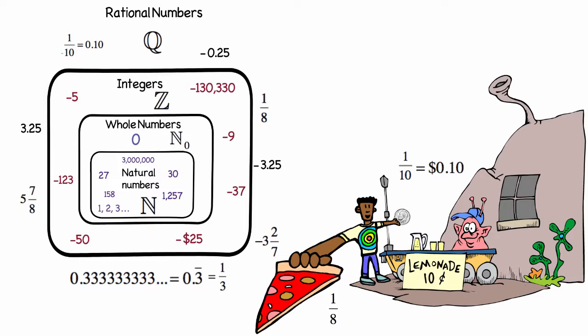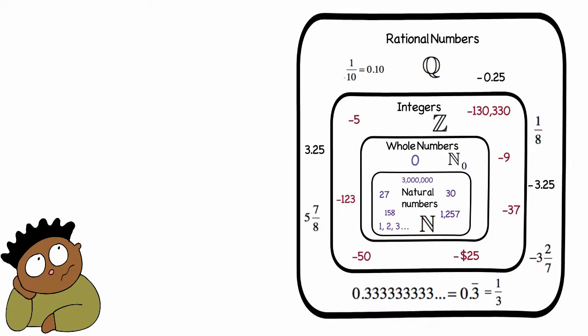Later on, we will show you that in fact all repeating decimals can be written as fractions. So, are there numbers that can't be written as a fraction? Yes, and they're called irrational numbers.